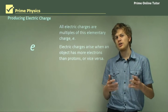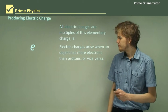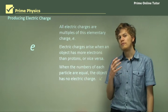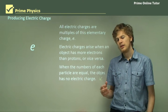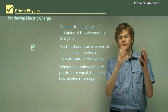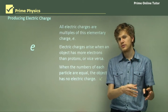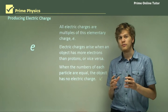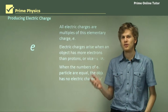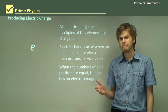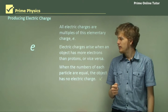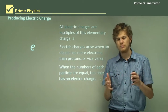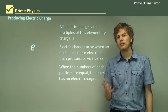Electric charges arise when an object has more electrons than protons, or vice versa — more protons than electrons. If they have the same amounts, then the charge will cancel out. When the numbers of each particle are exactly equal, the object will have no net charge, because every proton with a charge of positive 1.6 times 10 to the minus 19 is cancelled out by an electron with a charge of negative 1.6 times 10 to the minus 19. So all electric charges are due to an imbalance between the number of protons and the number of electrons in a material.